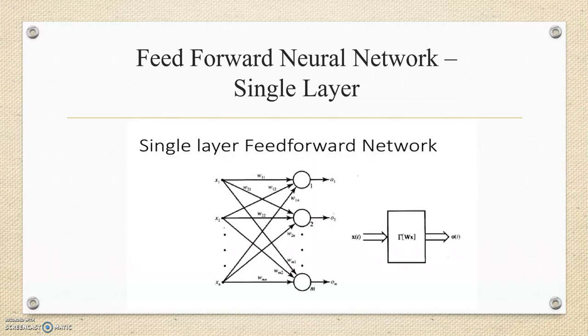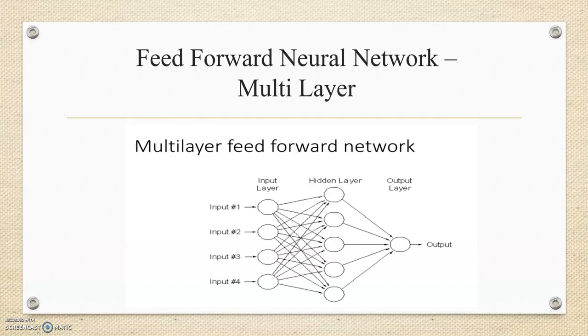These are the examples of Feed Forward Neural Network. The first one is single layer. In single layer, the input and output are reflected in which they are connected through some weight. And in multi-layer feed forward network, there are some middle values, middle nodes and we denote it as hidden layer.